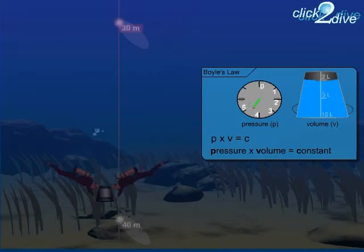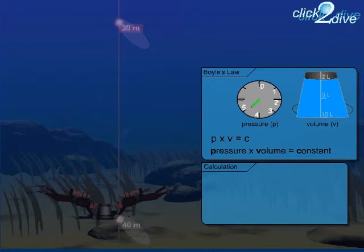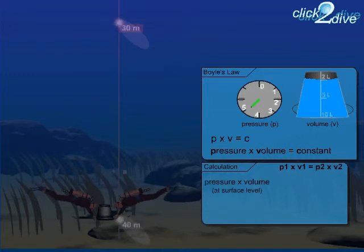You can calculate this easily with the following formula. On one side of this equation, you fill in the pressure and volume at surface level. Here, the pressure is 1 bar, and the volume of the bucket is 10 litres.